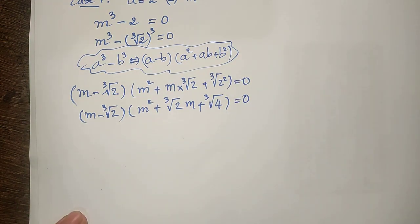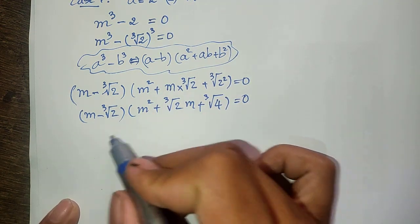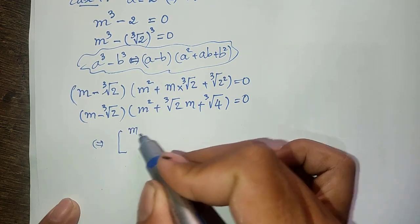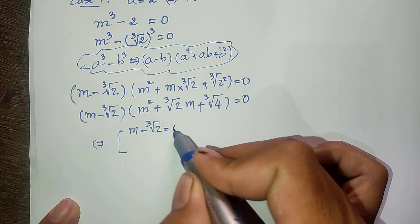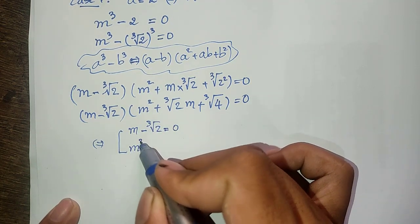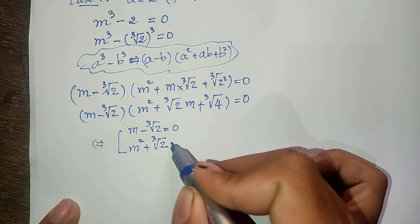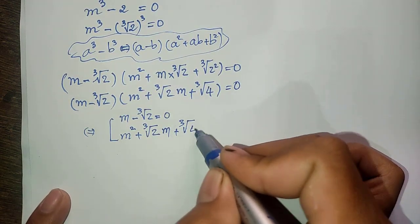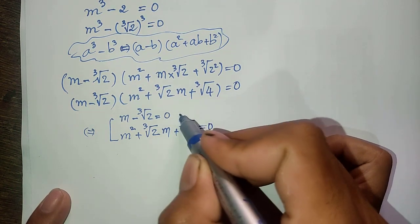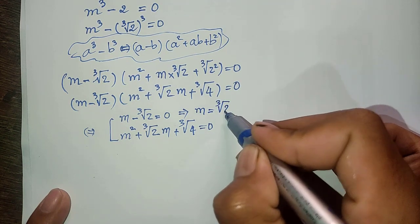These are the two factors. So we set each factor equal to zero: m minus cube root of 2 equals 0, giving m equals cube root of 2. And m squared plus cube root of 2 times m plus cube root of 4 equals 0.